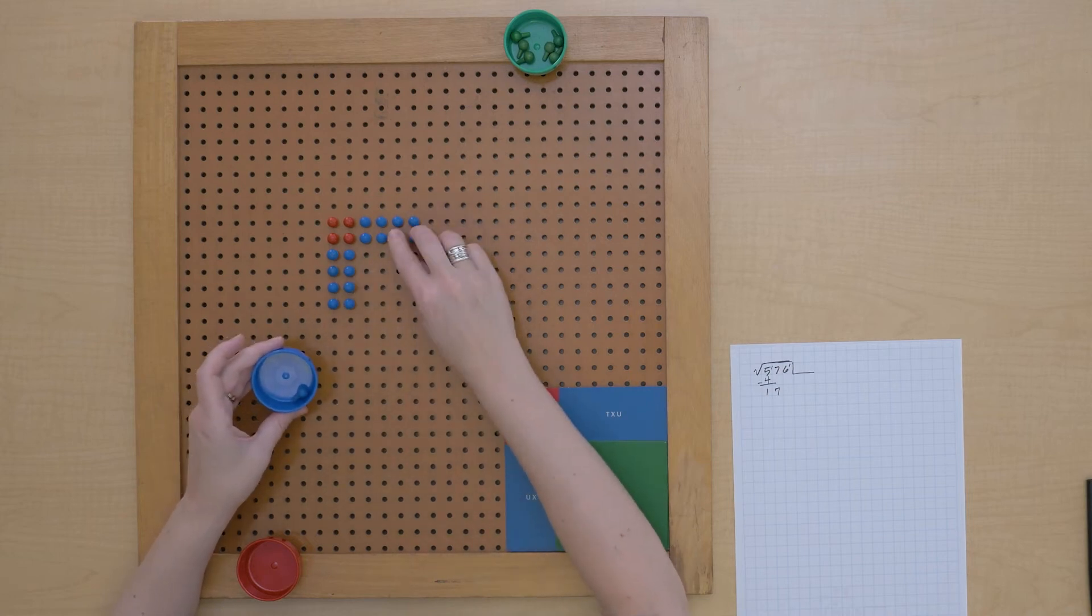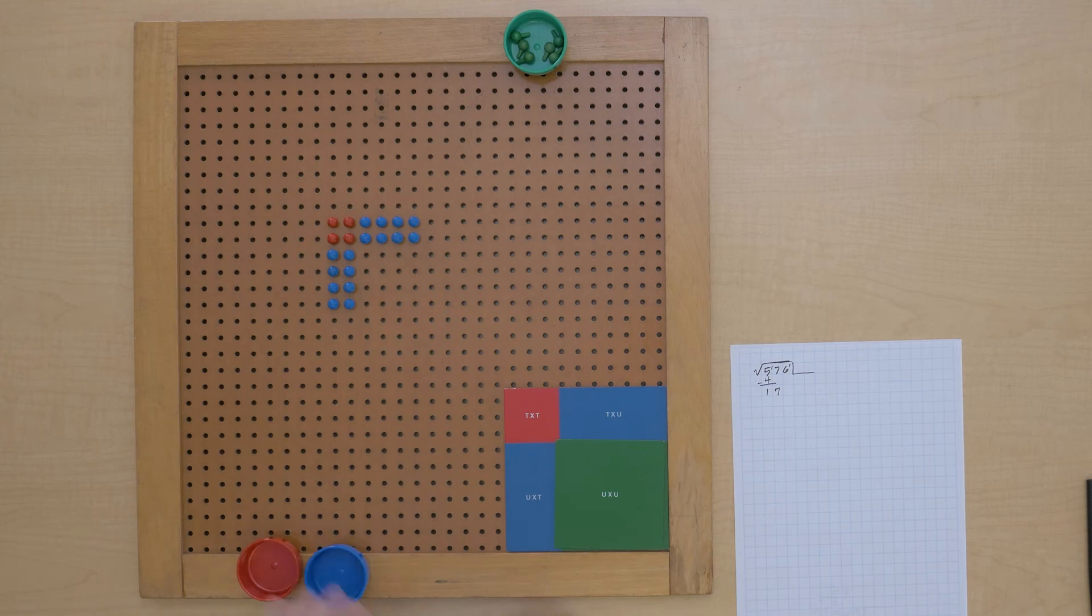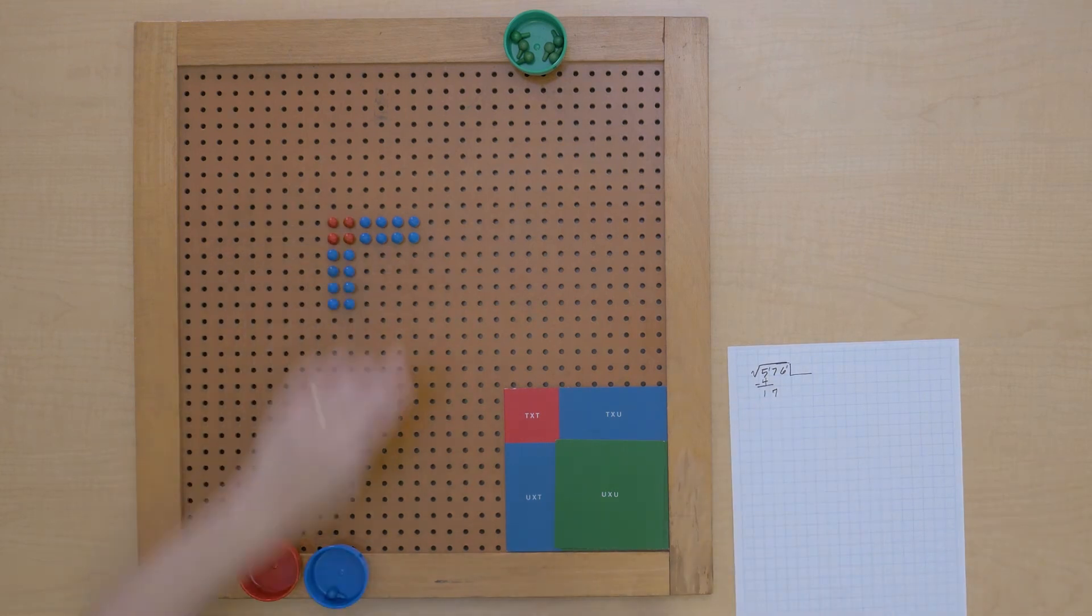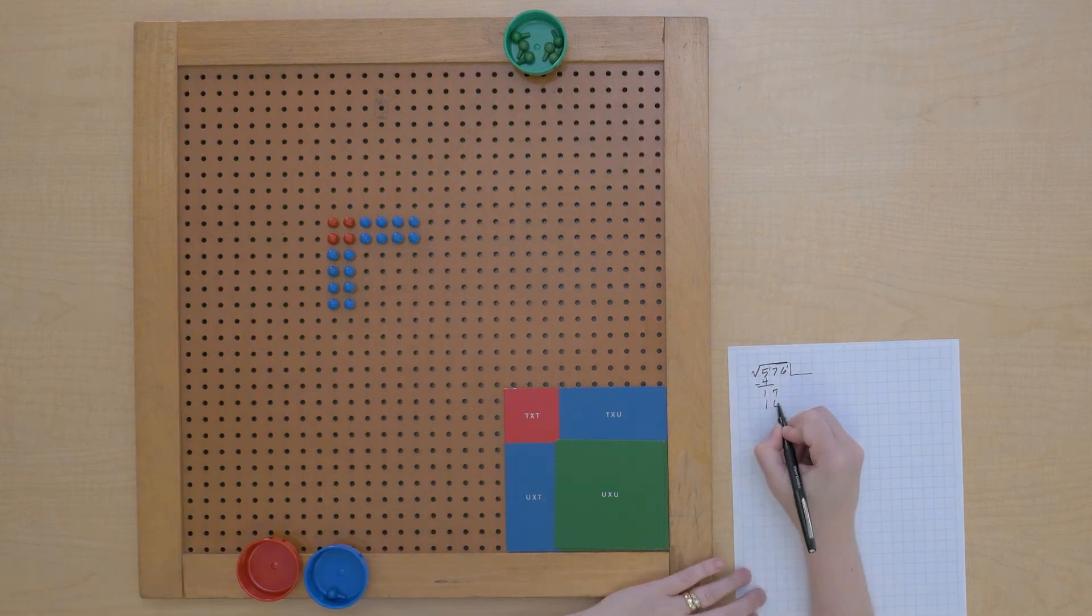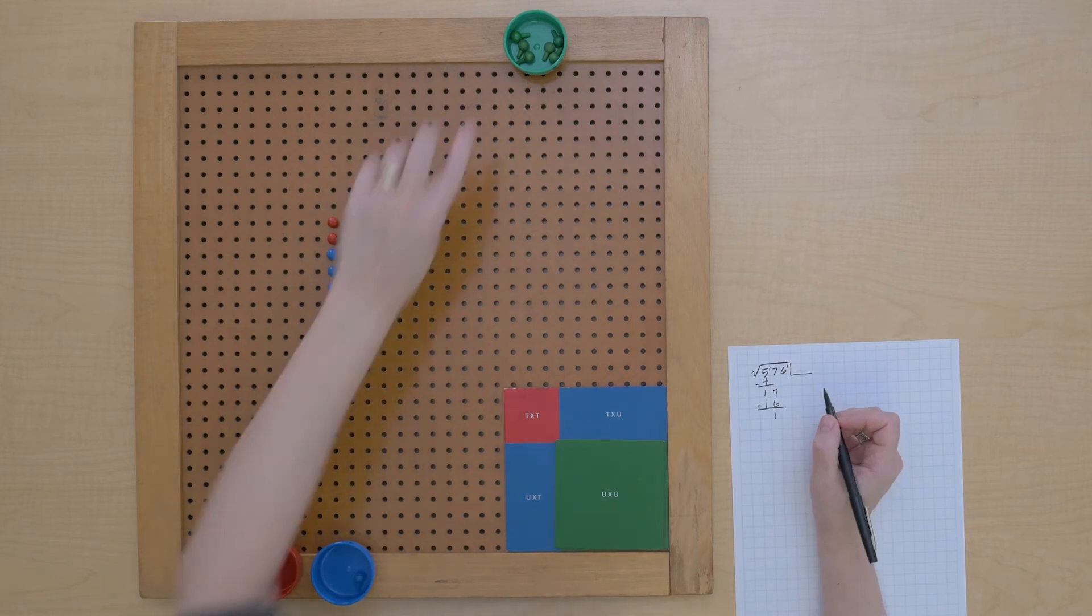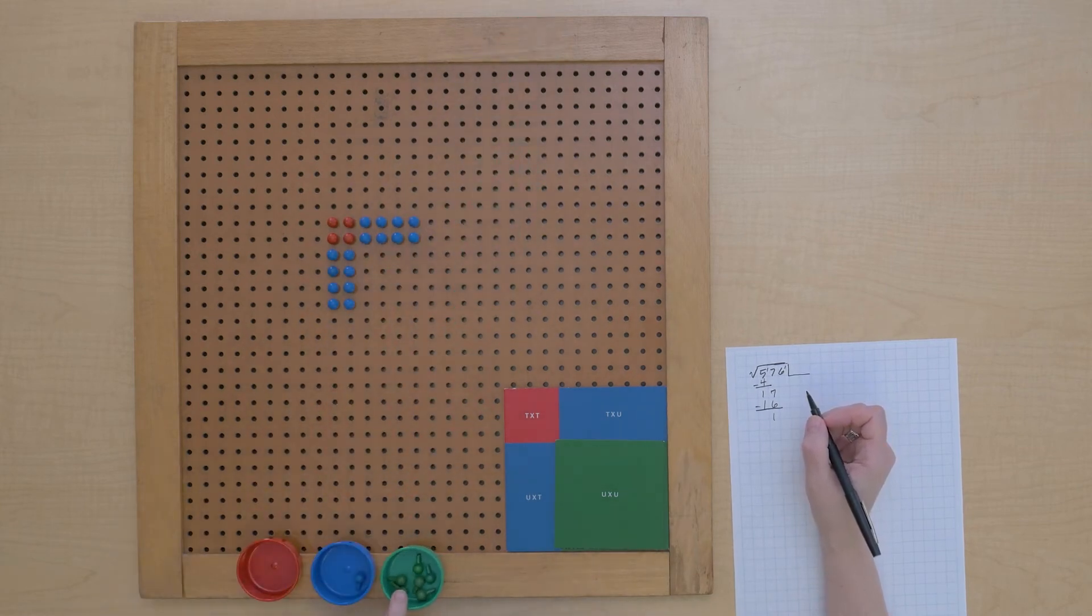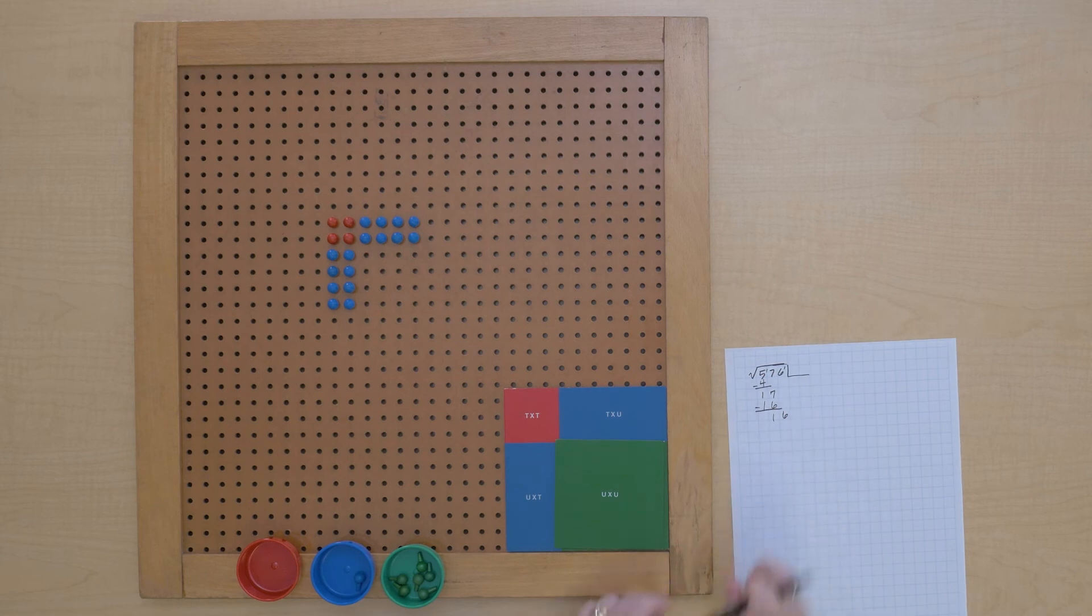All right. So we had those 17 tens and we used 16, so let's see how many we have left. We should have 1 left and we do. Now I'll bring down the units, I'll bring them down on paper. We have 16 units to work with.